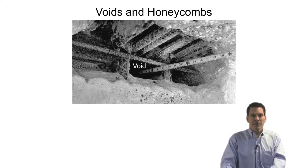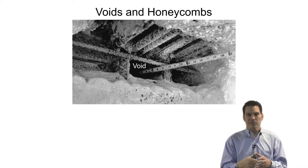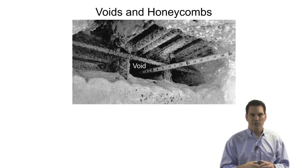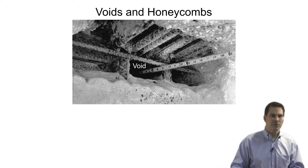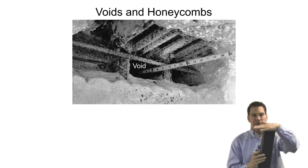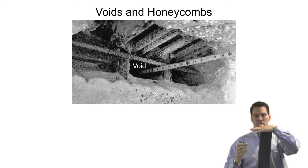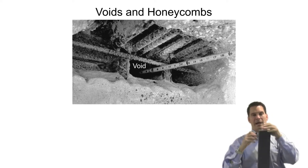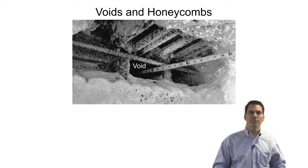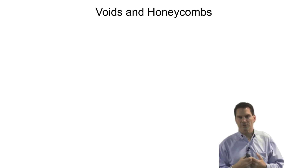A void is a physical area that does not have concrete — just like the word says — in a concrete pour. On the bottom right you'll see a picture of a beam-column connection where, because of either the placement, the vibration, the mix design, or a combination thereof, an area of concrete is completely open and not filled with concrete. That's a typical void.